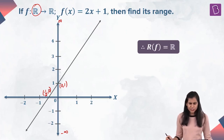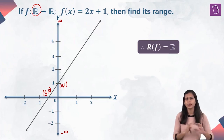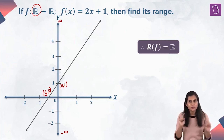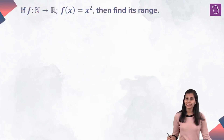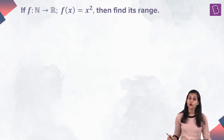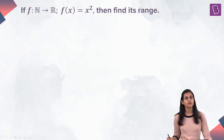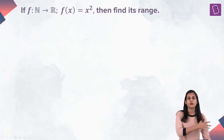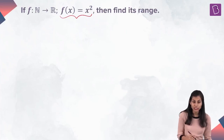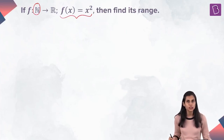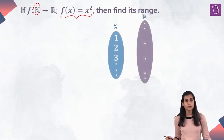You might wonder whether it is always feasible to find the range of a given function using the arrow diagram or graphical approach. The answer is no. There is a convenient algebraic approach to find the range of a function — let's understand that. But first, let's take a pause and recall the behavior of the square function defined by the rule f(x) = x², which corresponding to any real number as input produces its square as the output. The question asks me to find the range of the square function corresponding to the set of natural numbers being the domain.